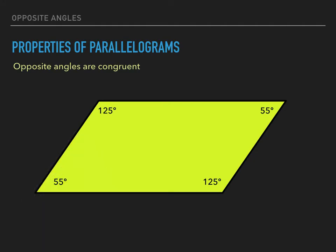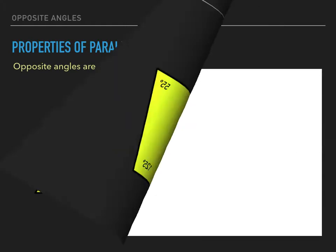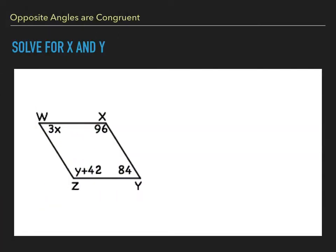Now we can use the property that opposite angles are congruent to solve some problems. Given parallelogram WXYZ, solve for X and Y. Angles W and Y are opposite angles, so they are congruent — we can set them equal. X equals 28. Looking at angles X and Z, the obtuse angles, they are opposite each other, so Y plus 42 equals 96, giving us Y equals 54.